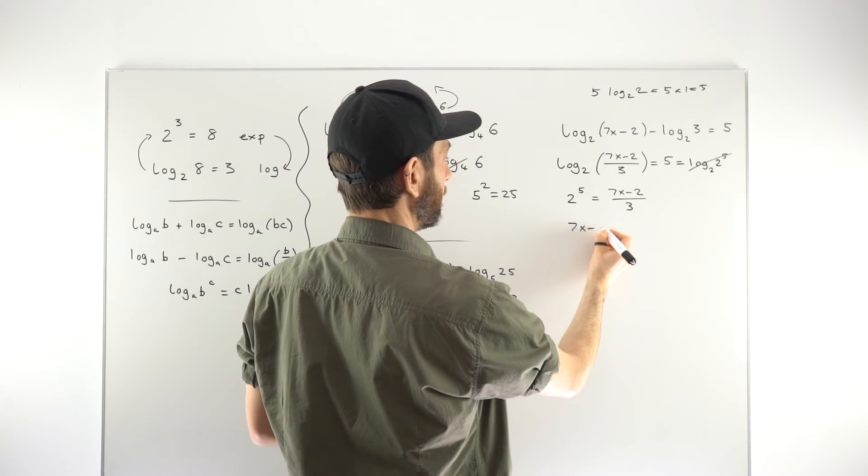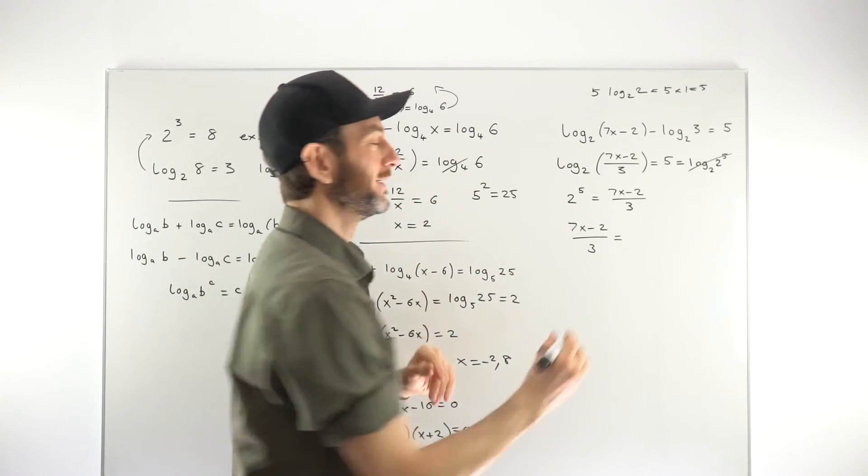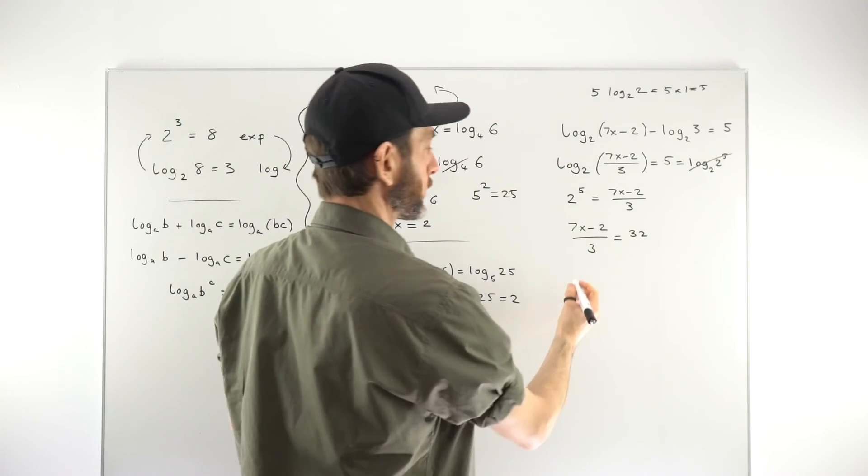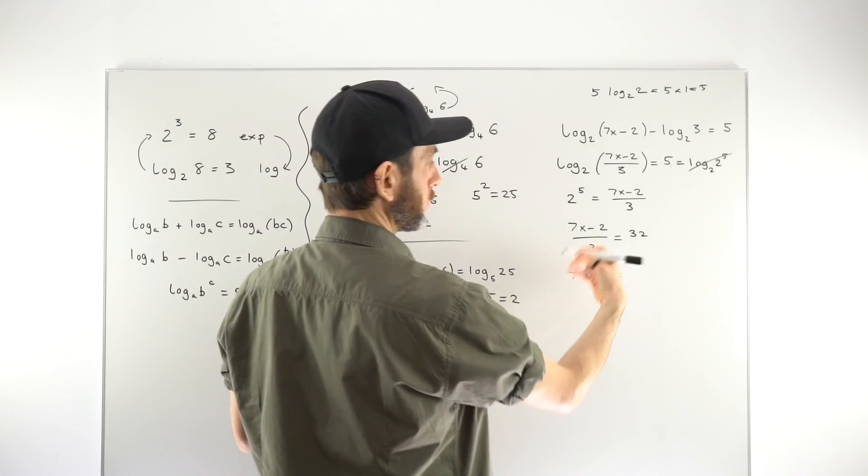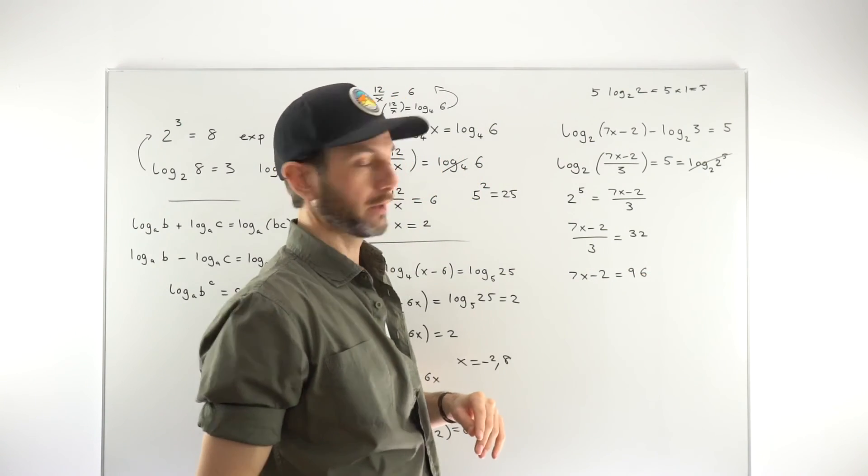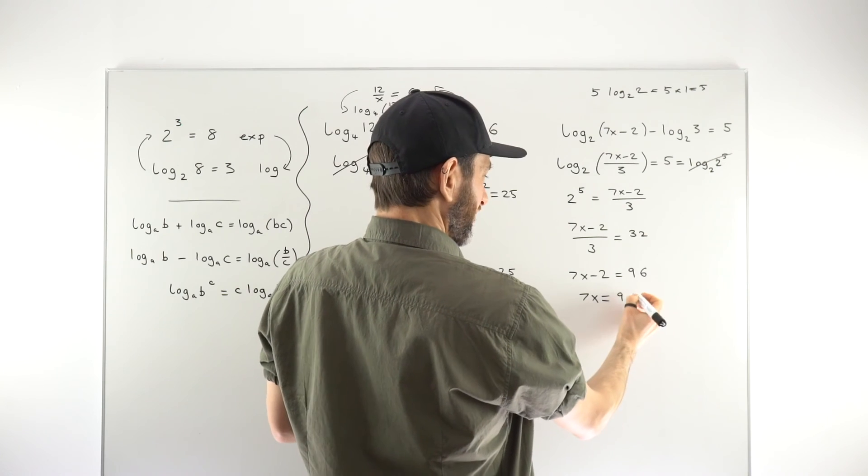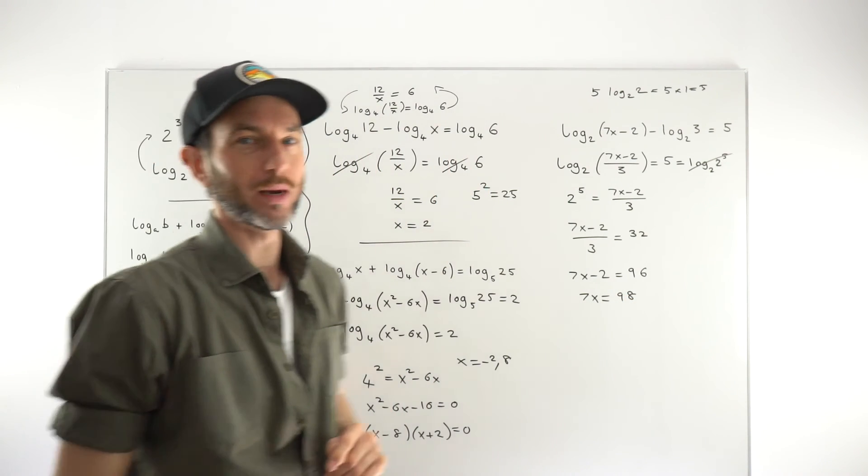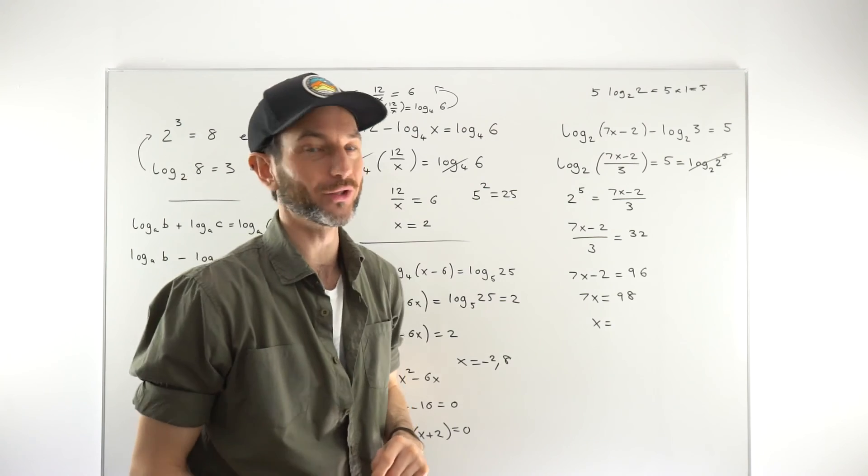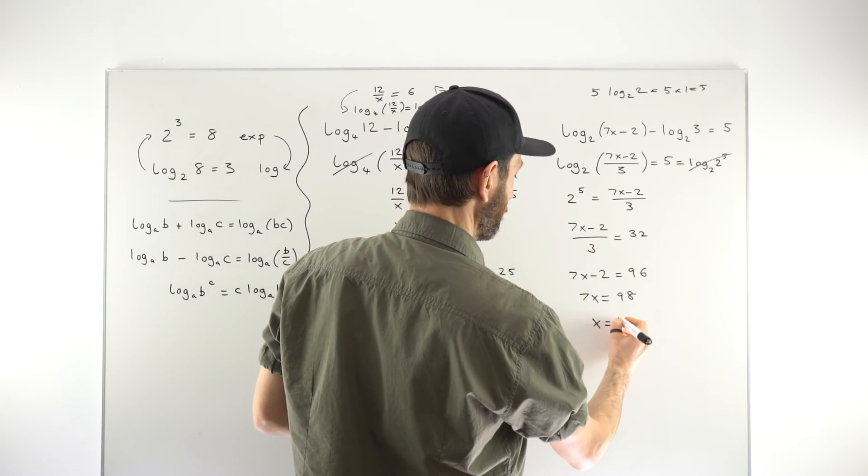So just taking this forward, we've got 7x minus 2 over 3 equals 2 to the power of 5. Counting 2s on your fingers, that would give you 32. Now we've just got a linear equation. It's got a fraction in it, but it's just a linear equation. We're going to solve it by getting rid of the fractions. So I'm multiplying both sides by 3. That would give us 7x minus 2 equals 96, giving 7x equals 98. 10 times 7 is 70, that would leave us 28. 7 goes into 28 four times, so the final answer would be 14.